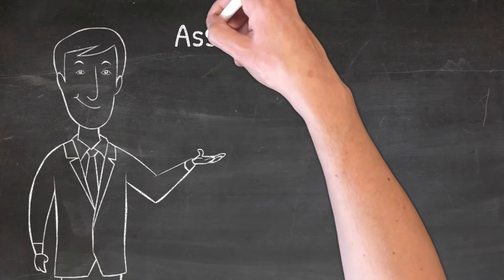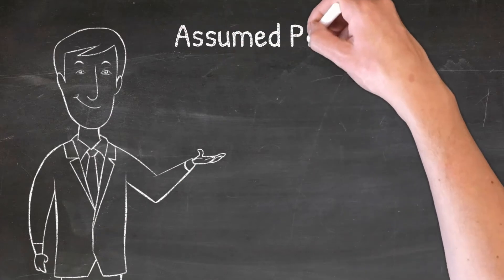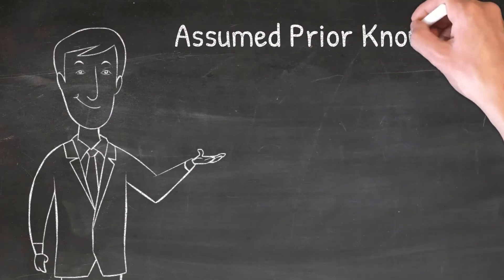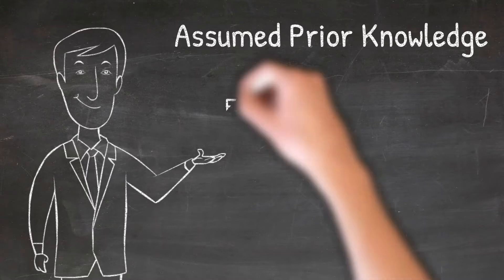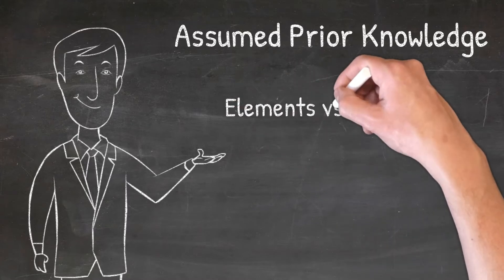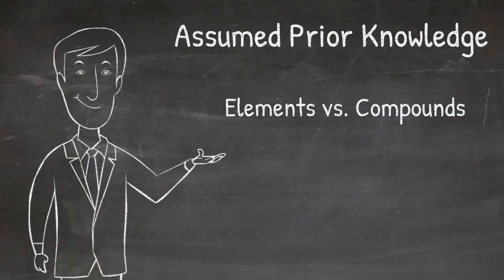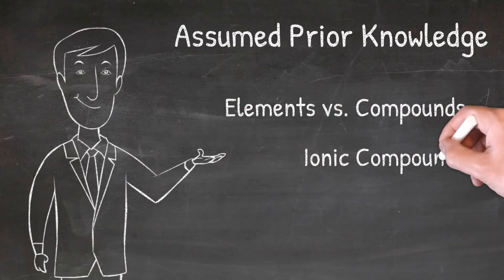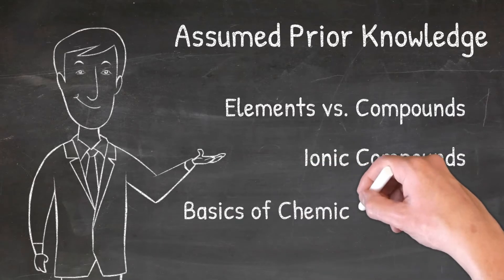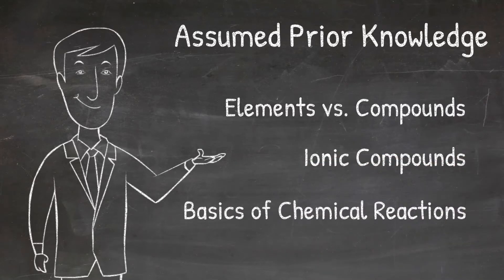In order to correctly identify the different types of chemical reactions, there are a few concepts that you need to remember from previous videos: what is an element versus a compound, what are ionic compounds, and what are the basics of chemical reactions? If you don't remember this information or need a refresher, please check out our videos on all of these topics.